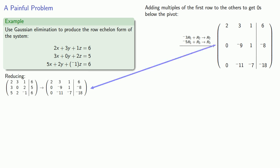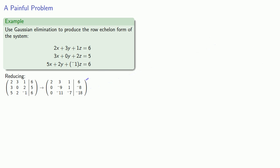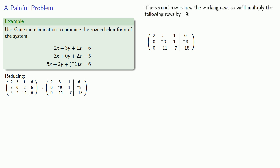So we'll write those down and we don't need the others. Since we have zeros below the first row pivot, we can move on to the second row where the leading coefficient is negative 9. So we'll multiply the following rows by negative 9. That gives us 0, 99, 63, and 162. We no longer need the original third row; we can replace it with this new third row.